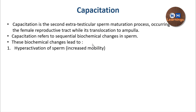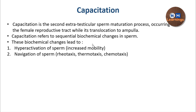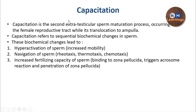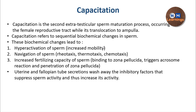These biochemical changes lead to: first, hyperactivation of the sperm — increased motility from 1.5 mm per minute to 3 mm per minute; second, navigation of the sperm, meaning not just movement but the direction — following directional cues from the ovum to reach it; and third, increased fertilizing capacity — the ability to bind to the zona pellucida, trigger the acrosomal reaction, and penetrate the zona pellucida. Additionally, uterine and fallopian tube secretions wash away inhibitory factors present in the semen that were depressing sperm motility.